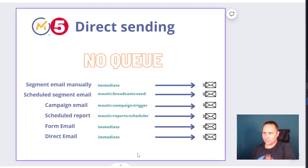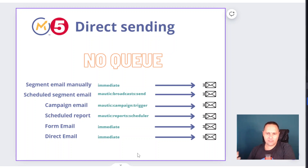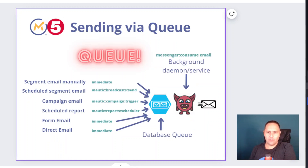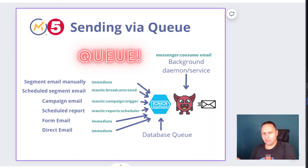So if we want to queue this up because we have a large amount of emails, or we want to send slowly, or for any other reason we'd like to control the flow of emails, we would like to use a queue. In Mautic 5 this has completely changed. In Mautic 4 we were using the send email cron job, which was just like all the others. But in Mautic 5 it's a more developed, much better system — we're using a background service or daemon for this purpose.